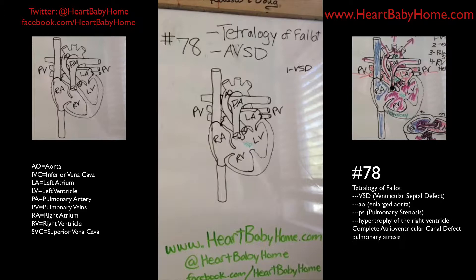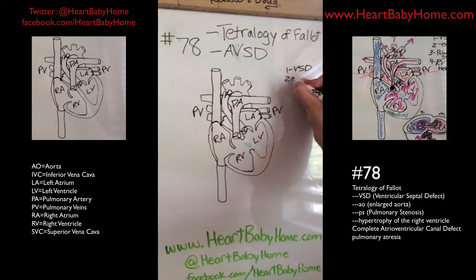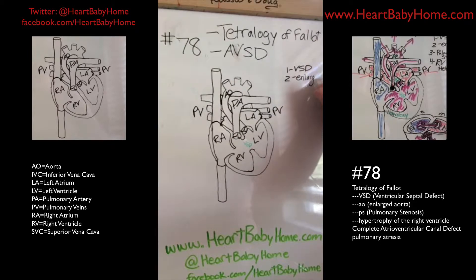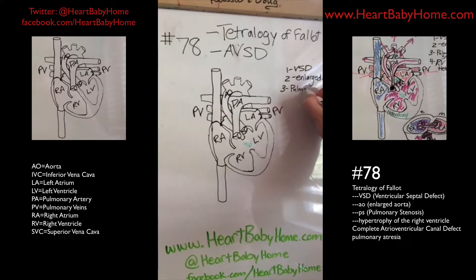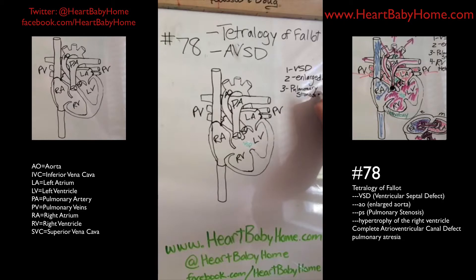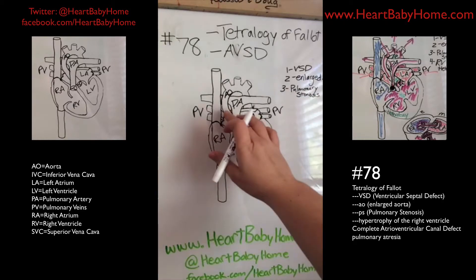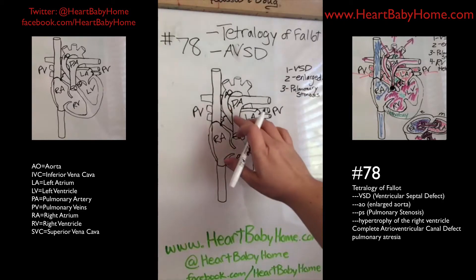The second part of Tetralogy of Fallot is an enlarged aorta, and the third one is pulmonary stenosis. Let's do these both at the same time.